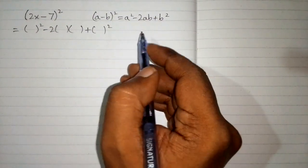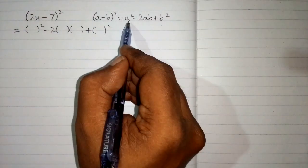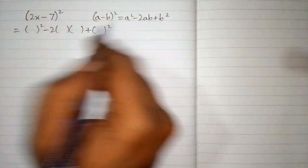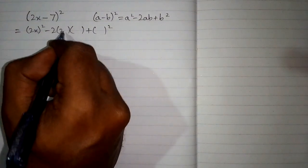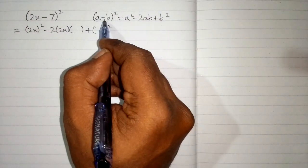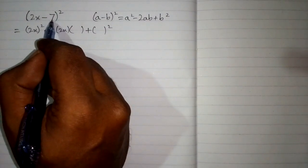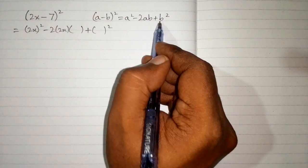So we can see that we have 2x in place of this a. So we will put 2x over here and over here. And then minus sign and then b in place of b we have 7. So we will put 7 over here and over here.